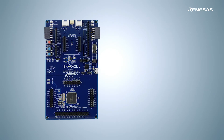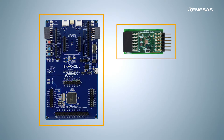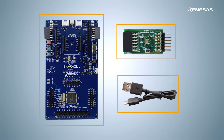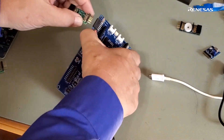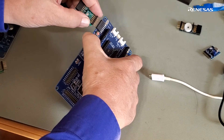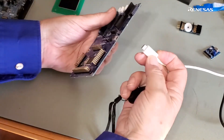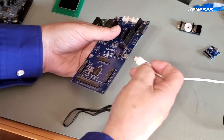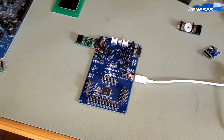First, we need some hardware, so let's put that together. We're going to use an EK-RA2L1 for the MCU, a ZMOD PMOD for the sensor, and USB for our debug. So let's plug that together now. And that completes our hardware.